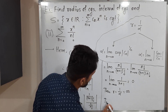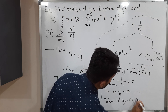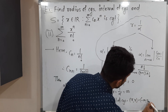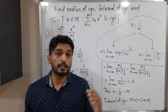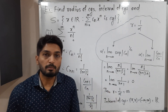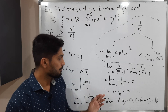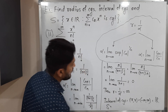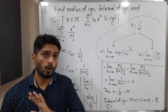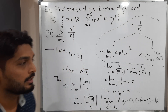Let us find the interval of convergence. The formula is (-R, R), so (-infinity, infinity), which means the entire real line ℝ is covered. That means the given power series is convergent for each and every real number. So for set S, since the series is convergent for all real numbers, S equals ℝ. In this way we solved the second sub-question.